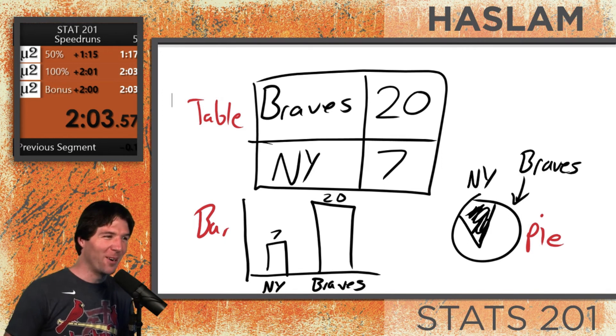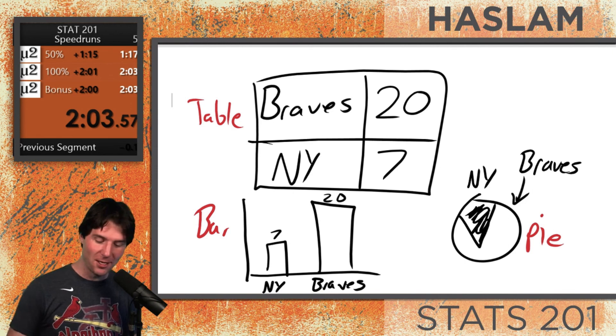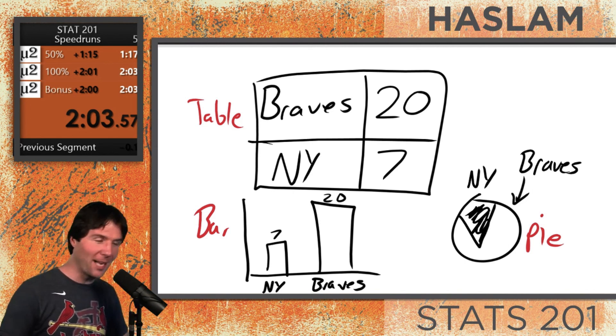A table, a bar chart, and a pie chart. This first speed run — I was a little bit scared. I need to challenge Easy Escape to a speed run; I don't know if you can beat this time. We'll hop back here to our main screen.